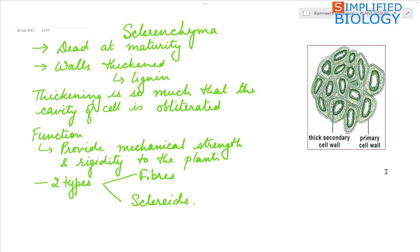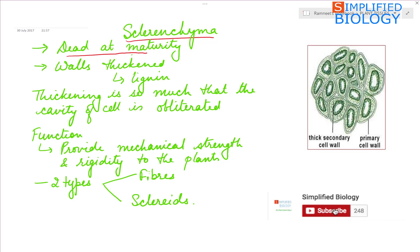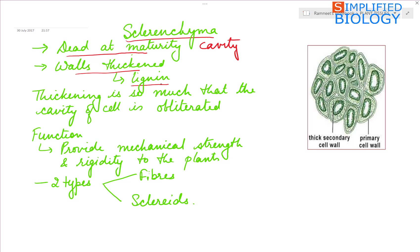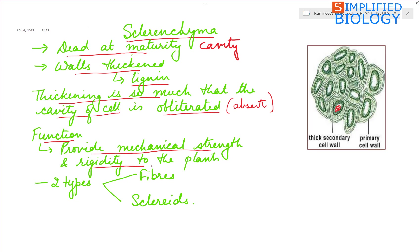The third type of simple tissue is Sclerenchyma. Sclerenchyma cells are dead at maturity, meaning there is no protoplasm; present within the cell wall is just a cavity. The walls are thickened and thickening is of lignin. The thickening is so much that the cavity of the cell is obliterated — altogether absent or a very small cavity is present. Their function is to provide mechanical strength and rigidity to the plants.